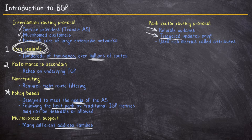As far as metrics, BGP doesn't use the bandwidth of the link. Instead, it uses something called attributes. We're going to talk about this more in a future video, but BGP attributes are really what gives us a lot of control over how BGP behaves.